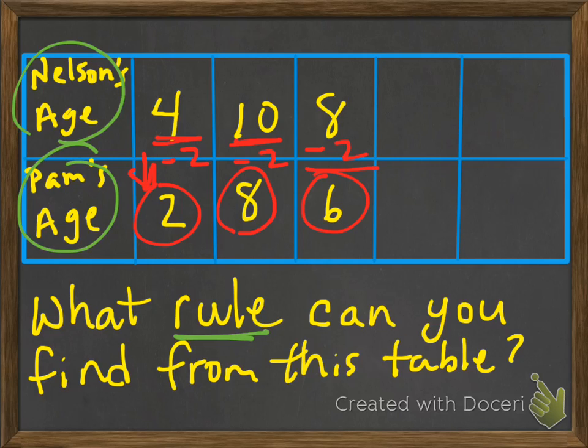Let's continue. Let's say Nelson is 11. If we subtract 2, then Pam's age should be 9. And if we try, let's say Nelson is 7. Subtract 2, then Pam's age is 5. So what is the rule? We're going to subtract 2 from Nelson's age every single time. So no matter how old Nelson gets, you subtract 2, you're going to get Pam's age. That is the rule. Subtract 2.